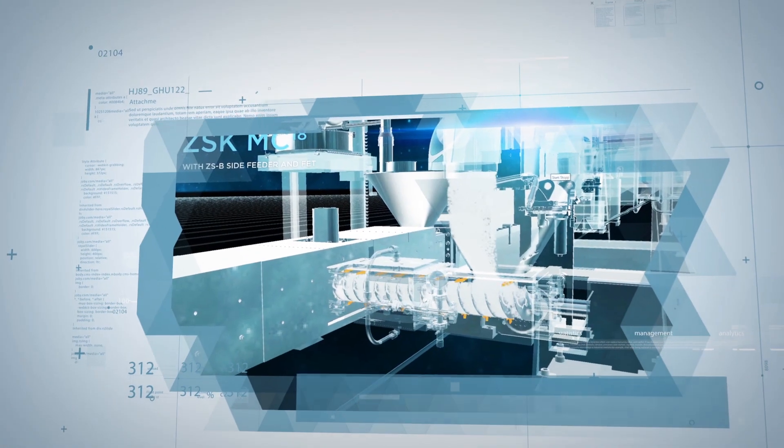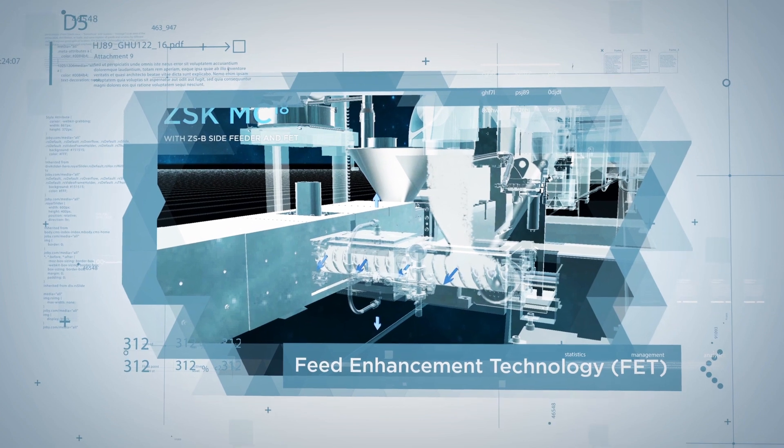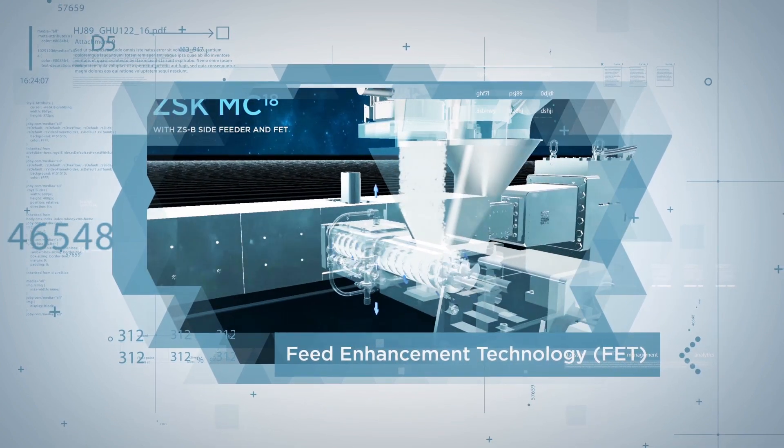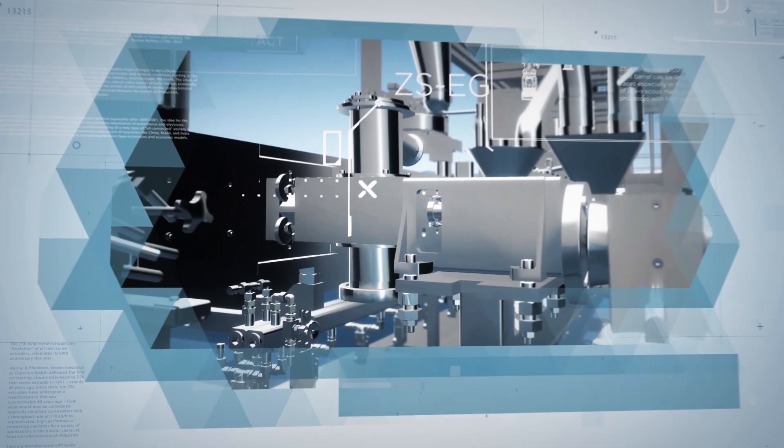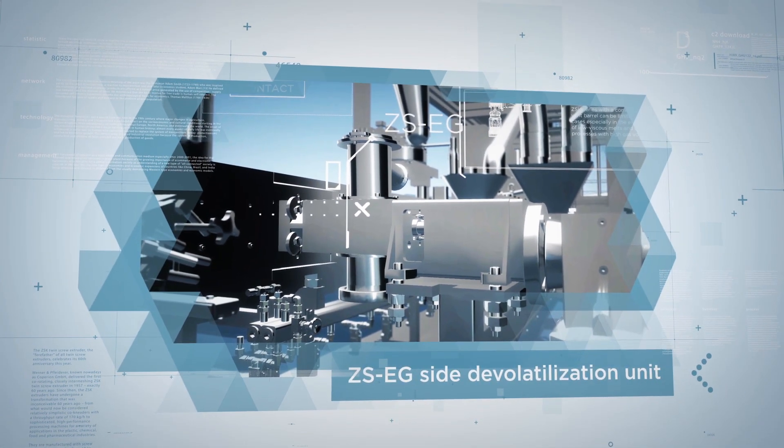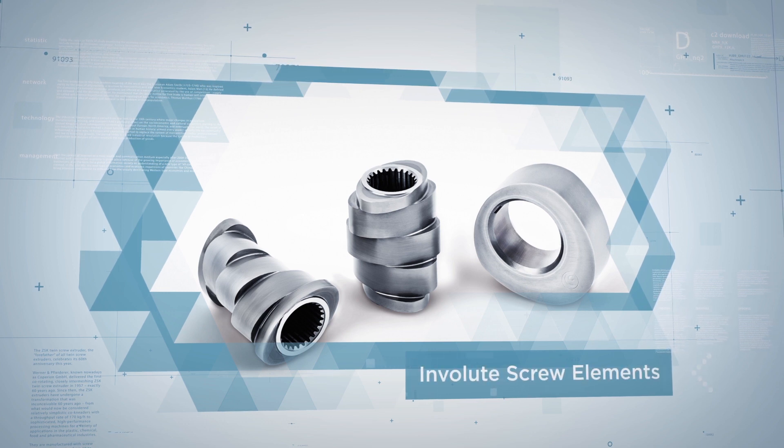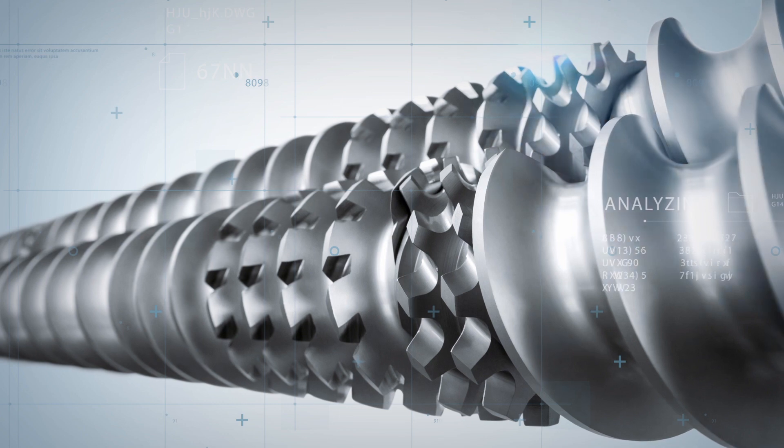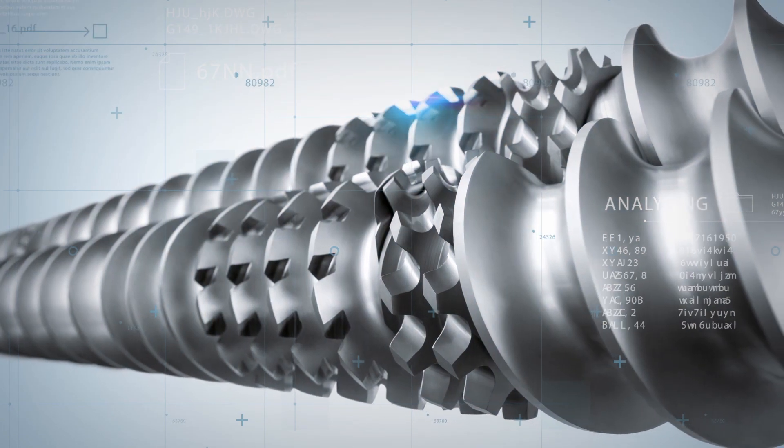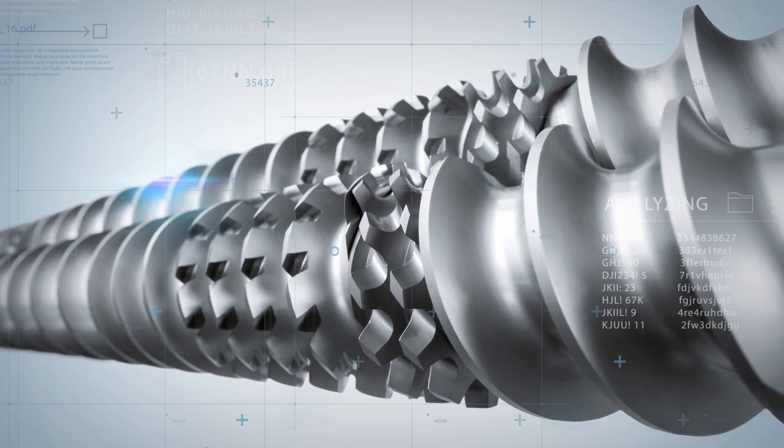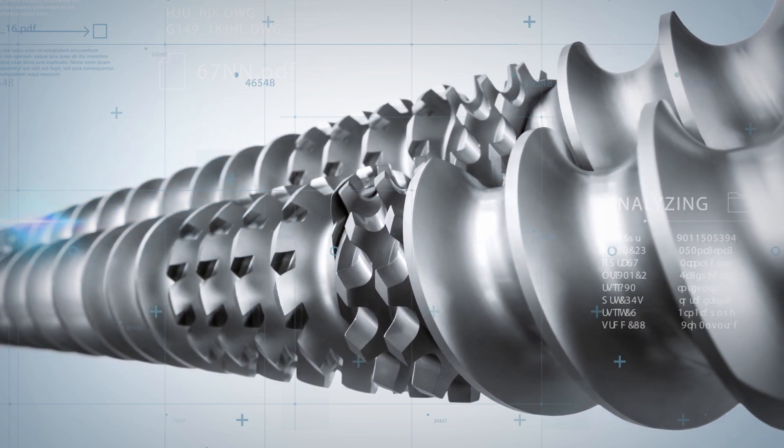Examples include patented feed enhancement technology for increasing the feed rate of low bulk density materials, the ZS-EG side devolatilization unit, and patented involute screw elements for higher throughput rates and enhanced product quality of highly filled compounds. At the same time, research is being performed on a variety of materials and coatings for increased abrasion and corrosion resistance of the screws and barrels.